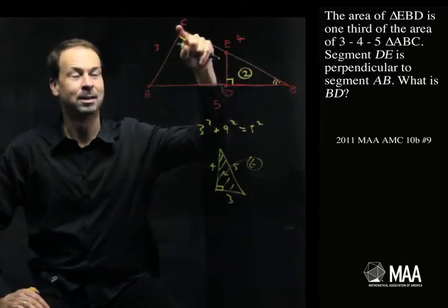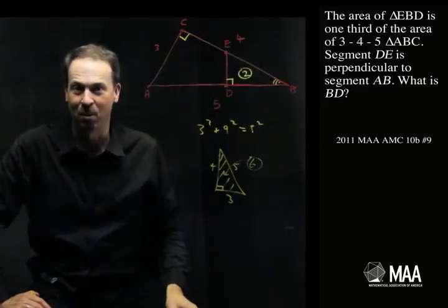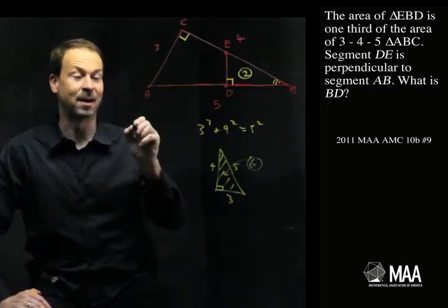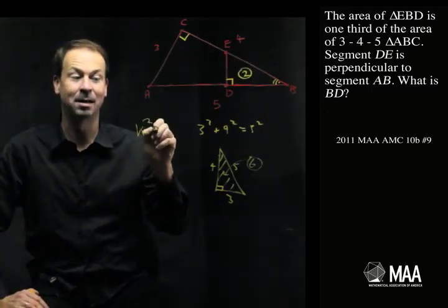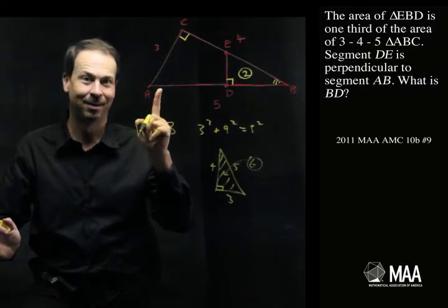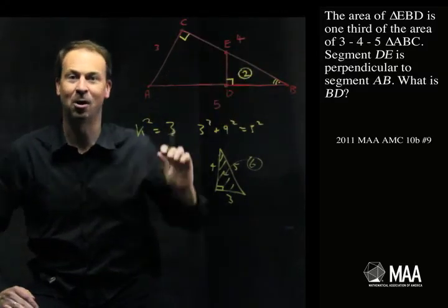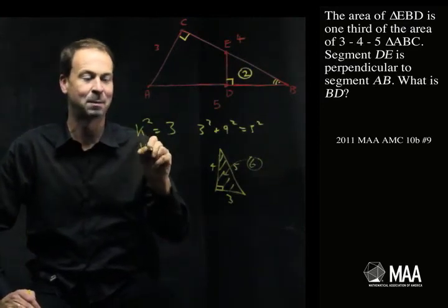These areas, 2 to 6, change by a factor of 3. And if area is changing by the scale factor squared, that means the scale factor, as I call k, k squared, must be 3. I now know what the scale factor is between these two triangles. I know that the factor of similarity must be root 3.